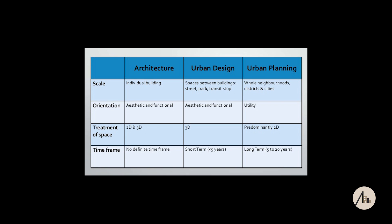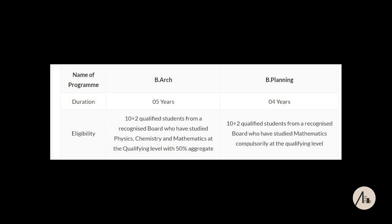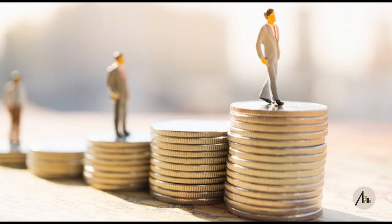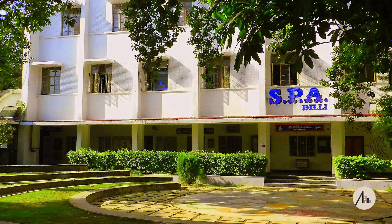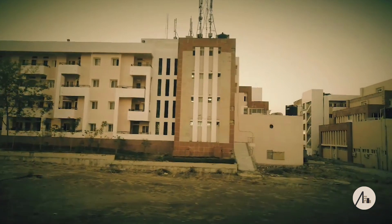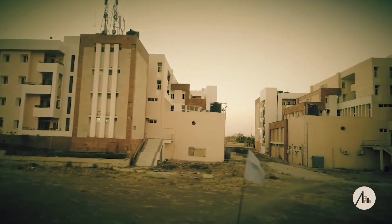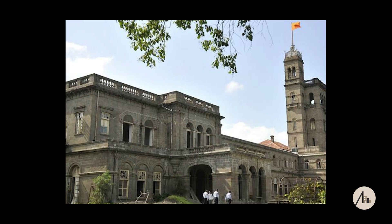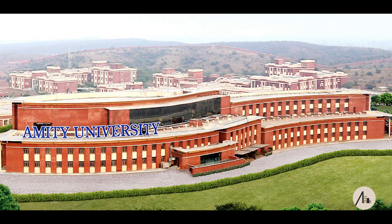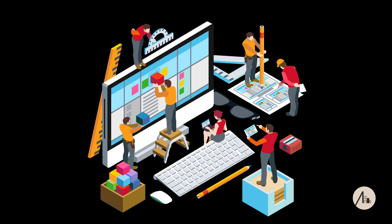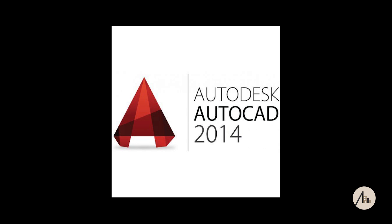Another difference is that B-Arch is a 5-year course while B Planning is a 4-year course. The salary for a B Planning fresher is around 30,000 to 40,000 rupees per month. The best colleges for B Planning are SPA Delhi, SPA Vijayawada, and SPA Bhopal. You can also consider MANIT Bhopal, College of Engineering Pune, Guru Nanak Dev University, Jawaharlal Nehru University, and Amity University. The software you will work on includes PowerPoint, AutoCAD, GIS, and Photoshop.